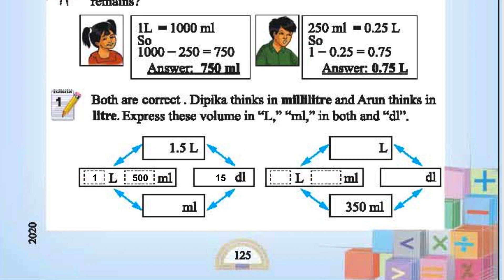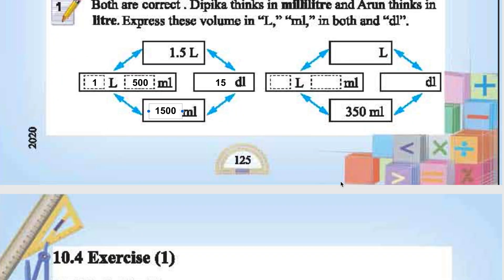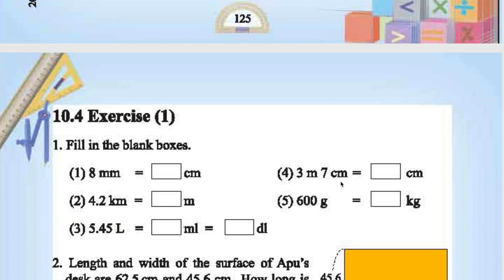In mL it is 1500 mL. Let's see this one, 350 mL, so 0 liter 350 mL. In deciliter it is 3.5 deciliter and in mL it is 350 mL. We will stop it here. We will continue with the exercise in the next session.